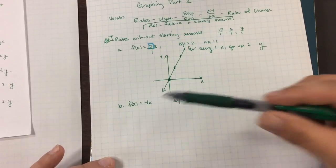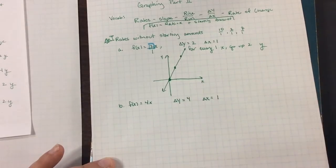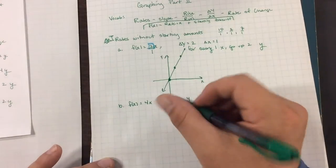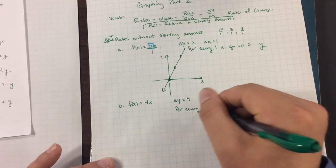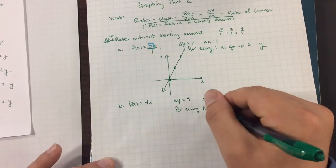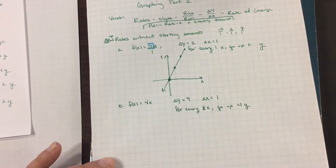This is going to be a change of y of 4 and a change of x of 1. What this means is that for every 1x, go up 4y.